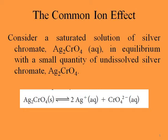Consider a saturated solution of the salt silver chromate, Ag₂CrO₄, in equilibrium with a small quantity of undissolved silver chromate. We have this equilibrium reaction: Ag₂CrO₄ (solid) gives 2 Ag⁺ (aqueous) and CrO₄²⁻ (aqueous).